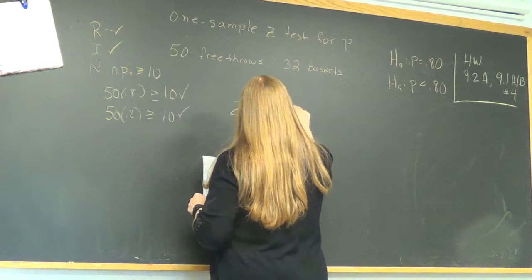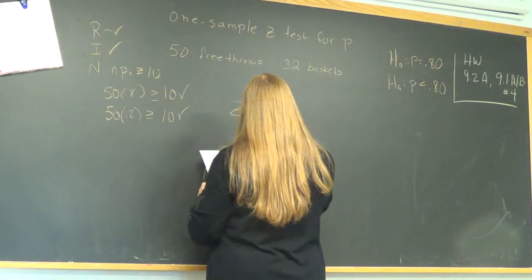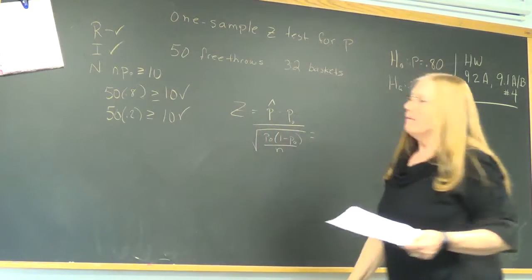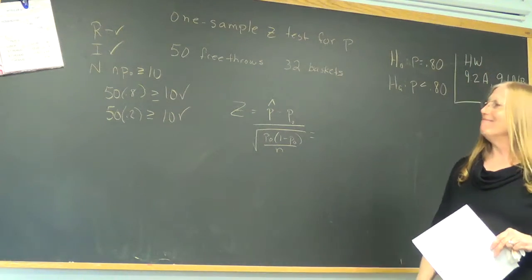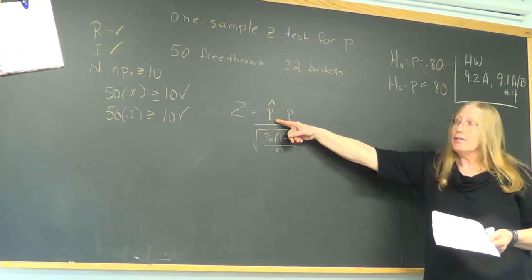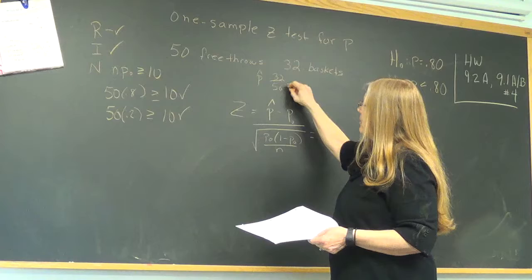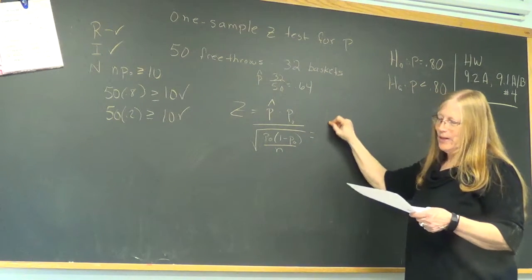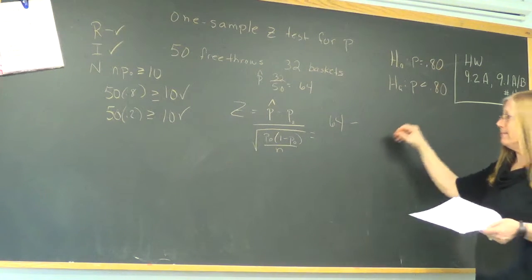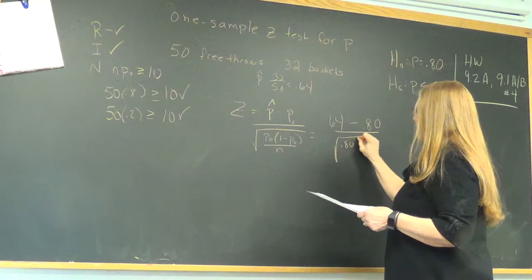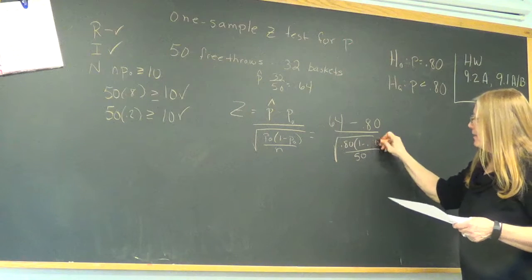Now we find the z-number. So we want P-hat minus P-naught over the square root of P-naught times 1 minus P-naught over N. Start putting numbers in. See if you're going to get where they go. So I'm finding the z-score right now. The whole reason I need a z is so I can get a P-value. All right. P-hat. That is from our sample. So up here I got 32 out of 50. So 32 out of 50 is my P-hat.